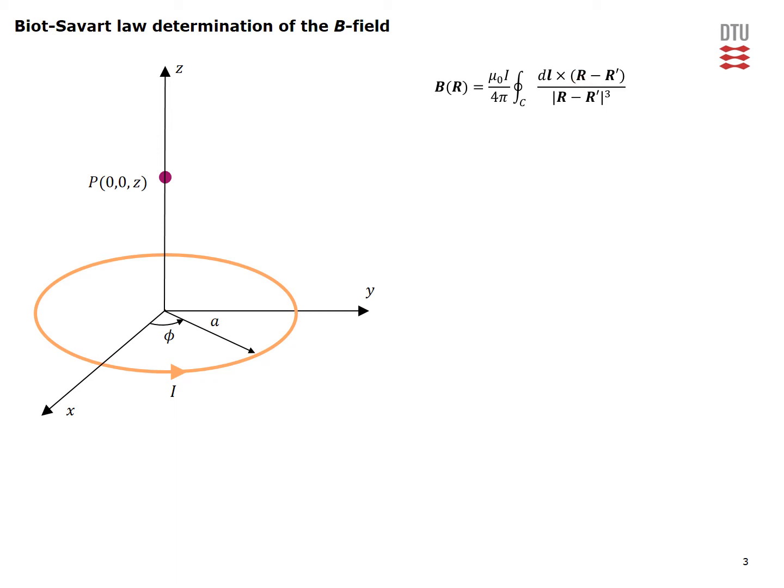R is the position vector of the observation point. R prime is the position vector of the source point. The DL element will be in phi direction and the length of this arc is equal to the radius of the loop times a small increment in d phi. This is the appropriate DL element.